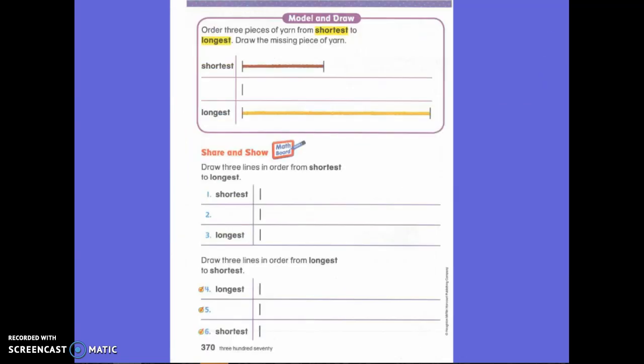So today we are going to put these objects in order by how we measure them. Notice, first grade, I don't have shorter, I have shortest. What does the EST mean? I'm comparing three objects. So the directions say order three pieces of yarn from shortest to longest, draw the missing piece of yarn. So which one did I want to start with? The shortest.